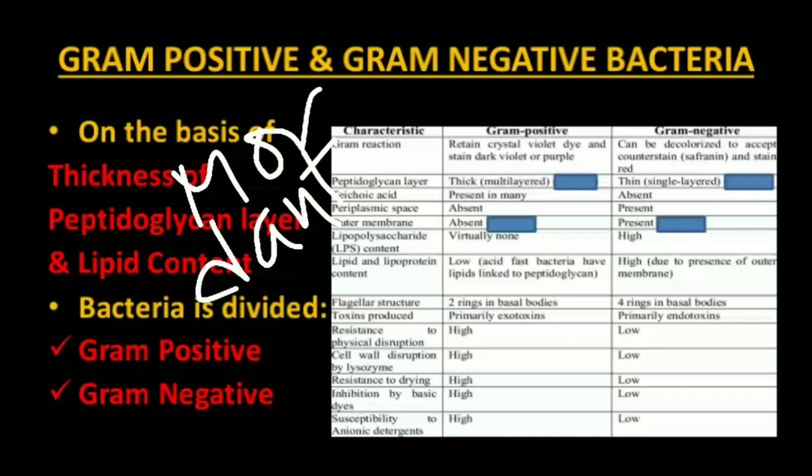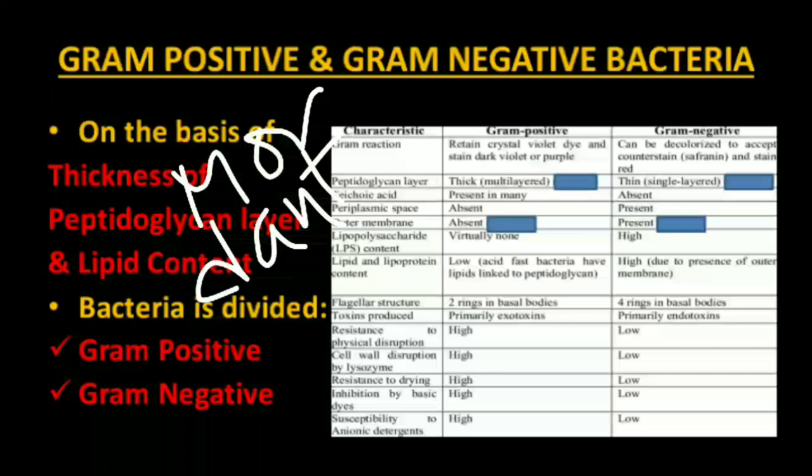To visualize gram-negative bacteria, a stain called safranine is added. Gram-negative bacteria take up the safranine stain and appear red under the microscope. These are the basic steps of gram staining — please make a note. The differences between gram-positive and gram-negative are described in a table you can go through on your own.